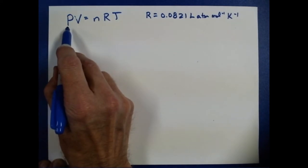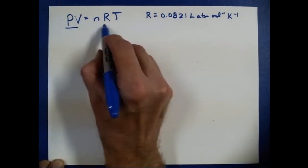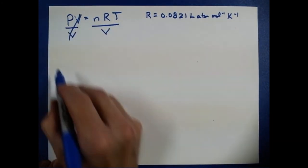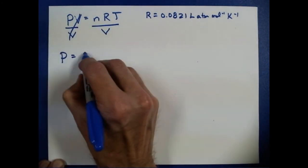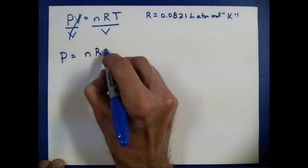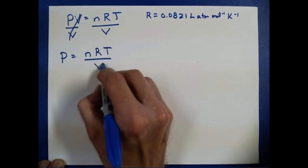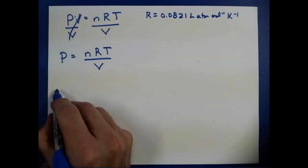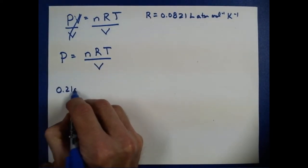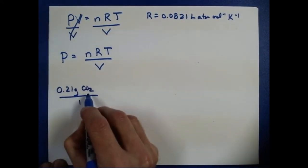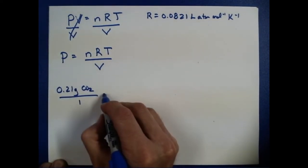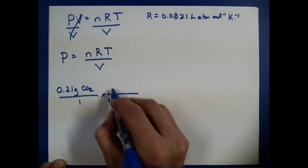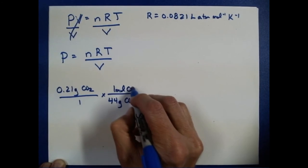We want to find the pressure, so let's go ahead and just divide both sides of this by volume. And we'll convert our ideal gas law into pressure, is the moles of gas, times the gas constant, times temperature, divided by the volume. So we're going to get the moles of gas from the 0.21 grams of CO2 that we measured that was released from the bottle. We know that there's 44 grams of carbon dioxide in one mole of carbon dioxide.